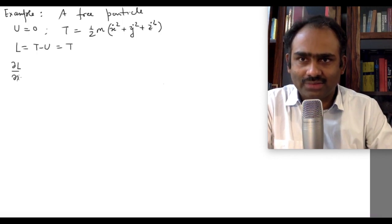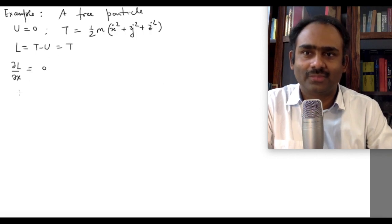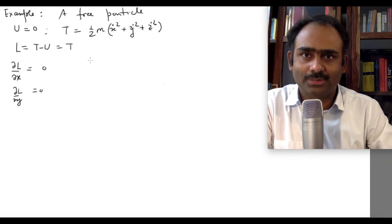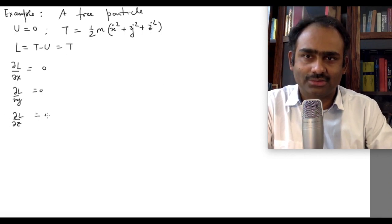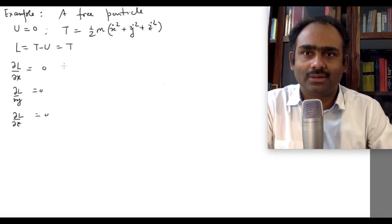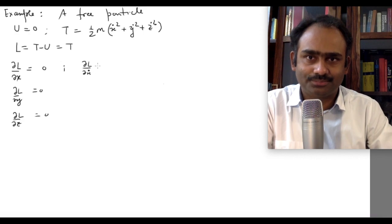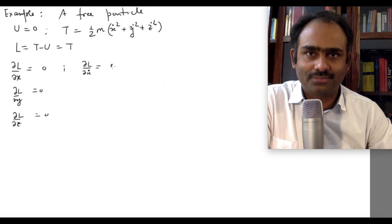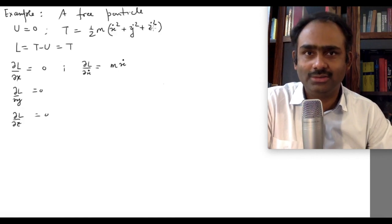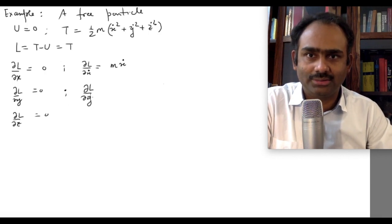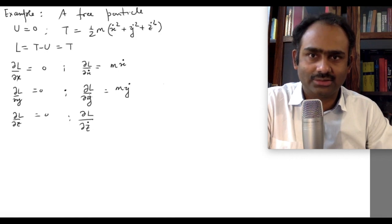Computing the required partial derivatives: ∂L/∂x = 0, ∂L/∂y = 0, ∂L/∂z = 0, since x, y, z do not appear explicitly — only velocities appear. On the other hand, ∂L/∂ẋ = mẋ, ∂L/∂ẏ = mẏ, and ∂L/∂ż = mż. These are partial derivatives with respect to the generalized velocities.